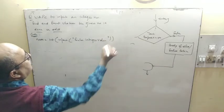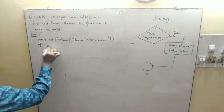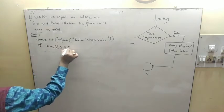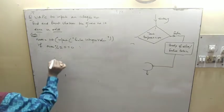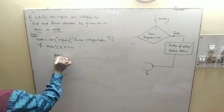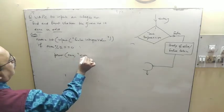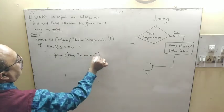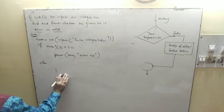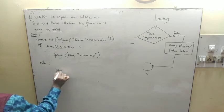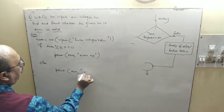If number modulo 2 equals 0, if condition satisfies, then print even number, else print odd.